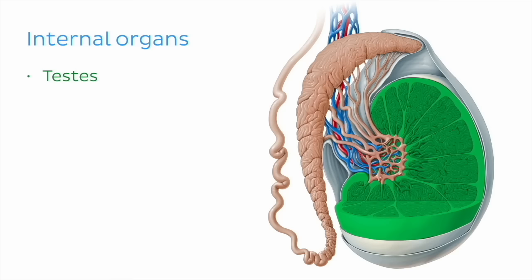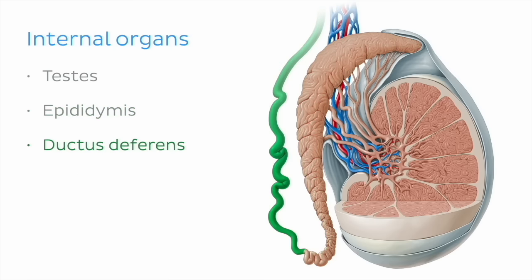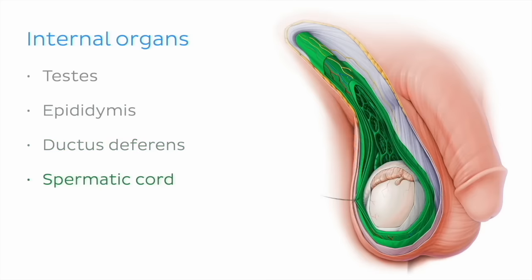Next we looked at the epididymis, where sperm is stored and matures. Then we talked about its continuation, the ductus deferens. Moving on, we discussed the spermatic cord, specifically how it contains the ductus deferens and travels through the inguinal canal.